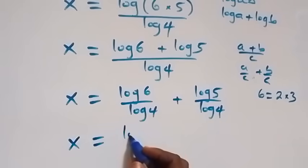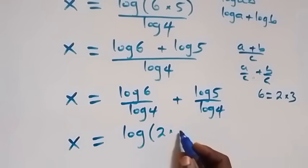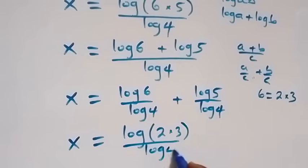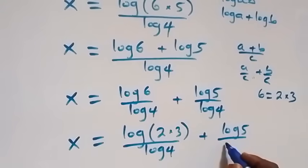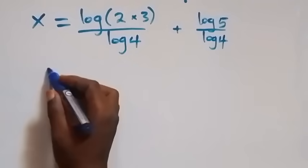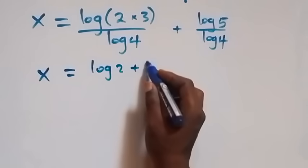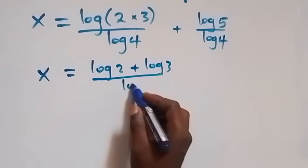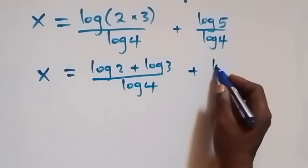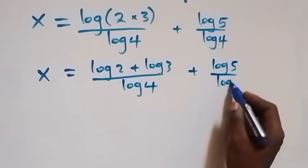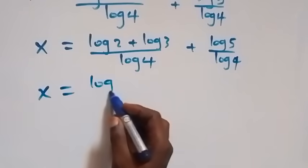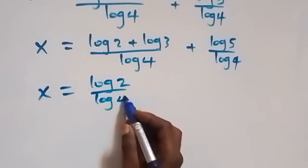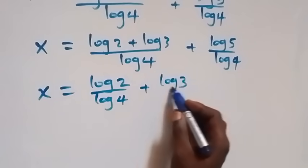We write 6 as 2 times 3, so we have log(2 times 3) over log 4 plus log 5 over log 4. Applying the product law again, x equals log 2 plus log 3, over log 4, plus log 5 over log 4. We can then separate the first fraction into two fractions: x equals log 2 over log 4, plus log 3 over log 4.